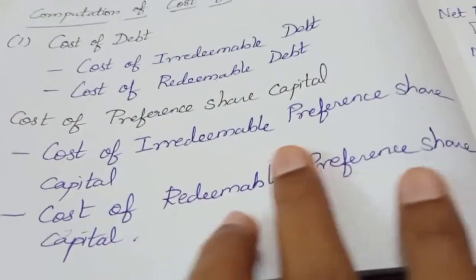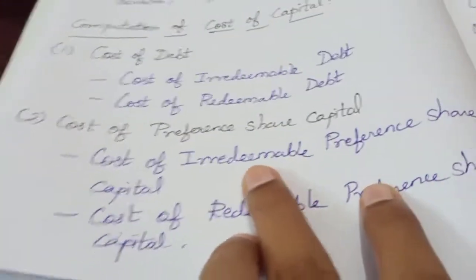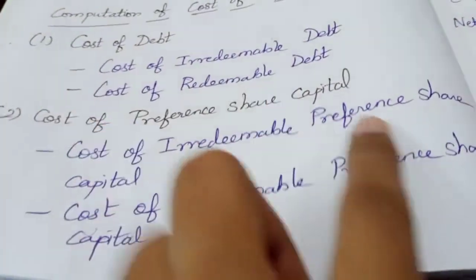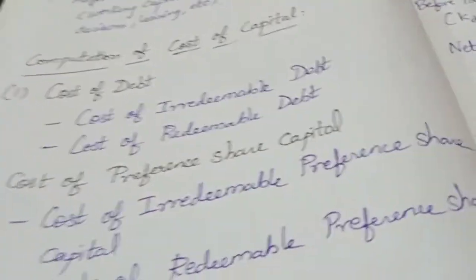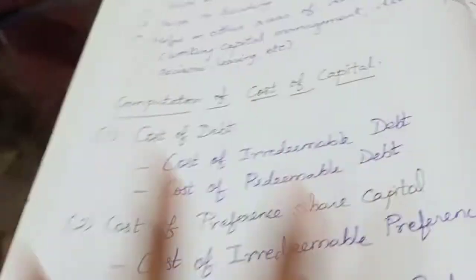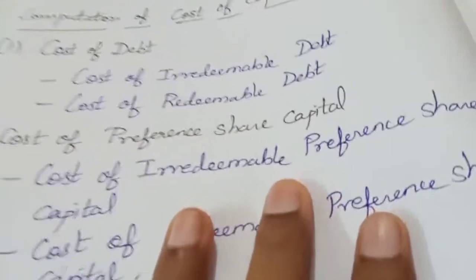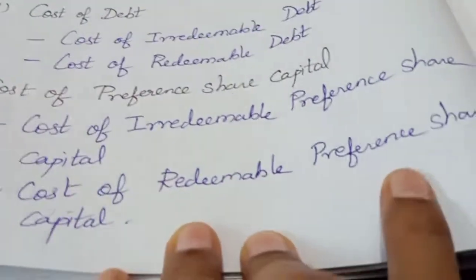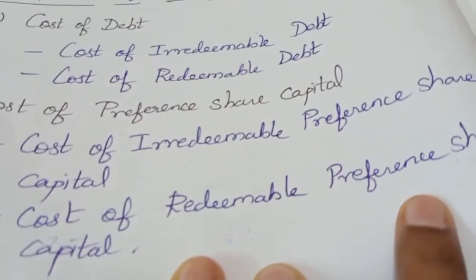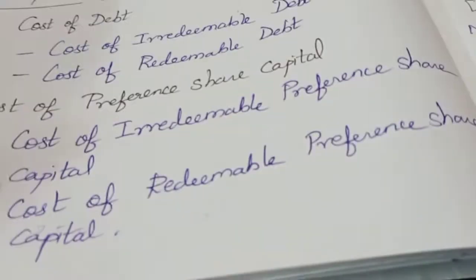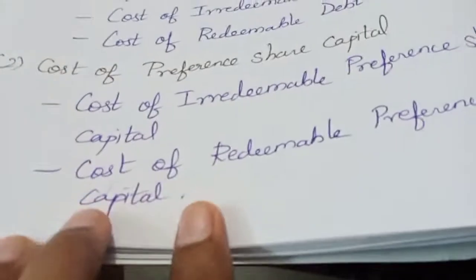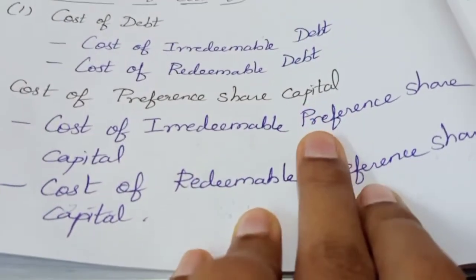Next is cost of preference share capital. Again, there are two types: cost of irredeemable preference share capital and cost of redeemable preference share capital. If the business keeps going, it is called irredeemable preference share capital. After a maturity period — say 5, 6, 10, or 15 years — you pay them back; that is redeemable preference share capital. We will work on these two problems.